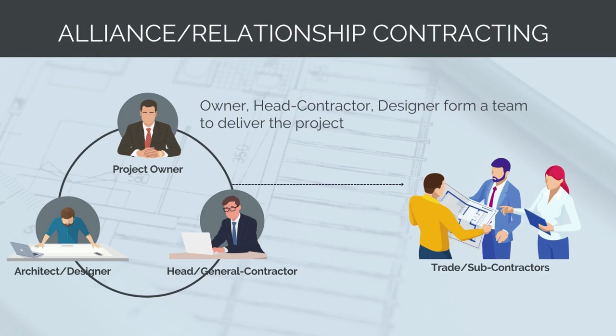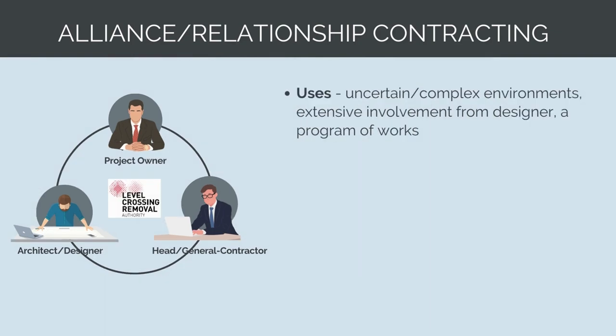The next model is alliance or relationship-based contracts. This is where the owner forms a team with the head contractor and designer to complete the design and deliver the project. It's a collaborative contracting model where they work together to come up with the project scope, budget and timeframes, and share in the profits or losses together. Similar to the managing contractor model, alliance contracts are used in uncertain and complex environments where extensive involvement from the contractor and designer is required. Alliances are also used where there is an extensive program of works — multiple ongoing projects to be delivered. For example, the level crossing removal program of works in Victoria, Australia are delivered using alliance contracts, as these are brownfield rail projects with significant uncertainty. The project team is formed during the feasibility stage and works through design, construction and completion stages.